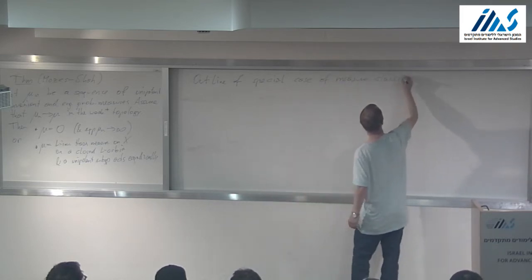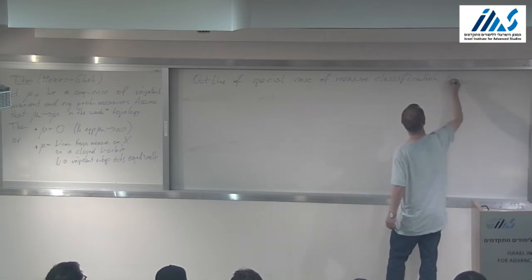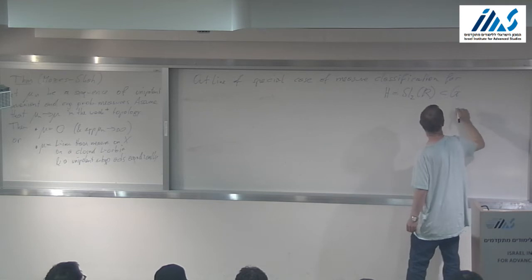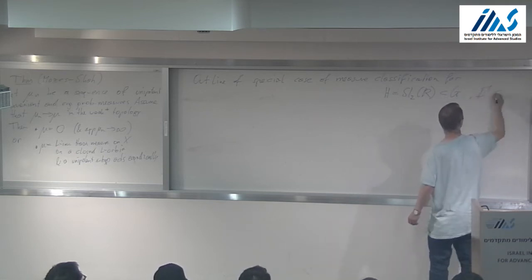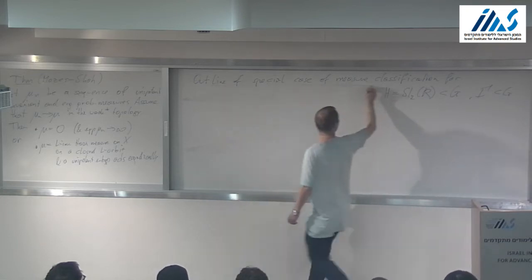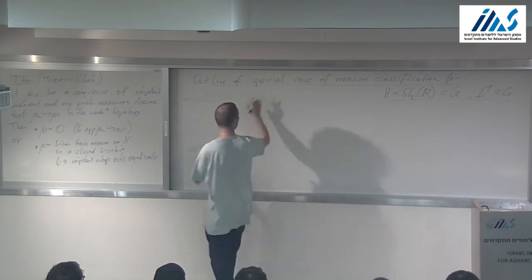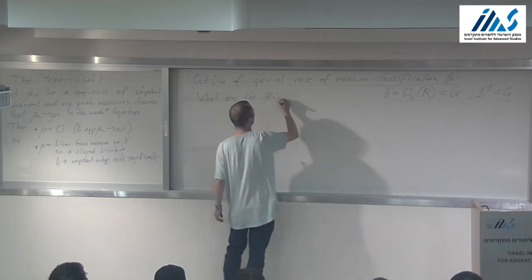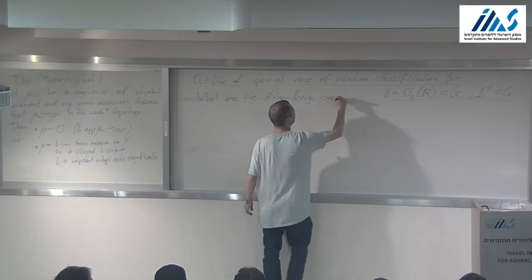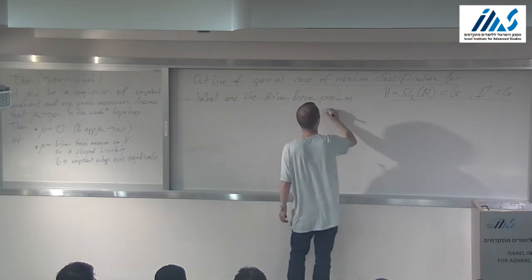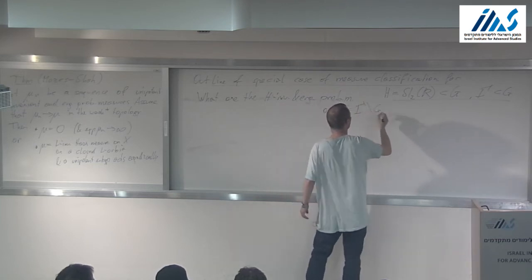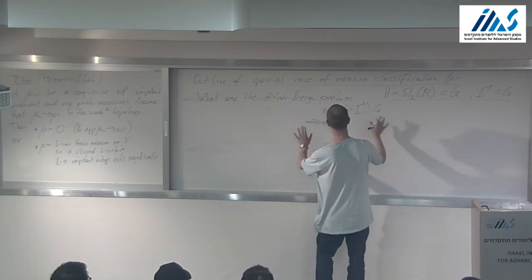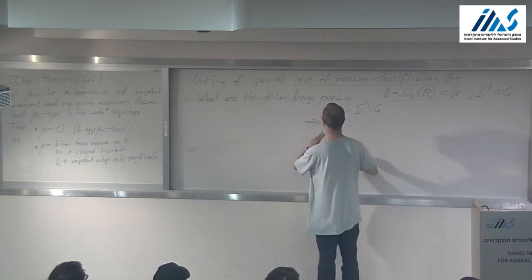For H being an SL2R inside a G — I don't care about G and I don't care about gamma, these could be general — what are the H-invariant and ergodic probability measures on X = G mod gamma? Of course they're all homogeneous. That's the answer, that's the theorem. I stated it for a one-parameter unipotent subgroup, that was the conjecture, but of course it's much more general: as long as the group is generated by unipotent subgroups, it's okay.